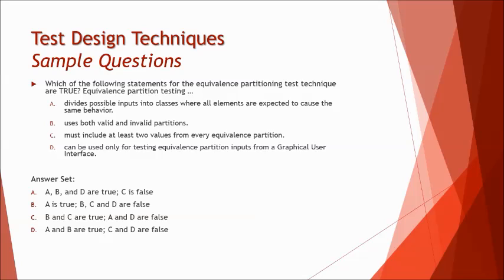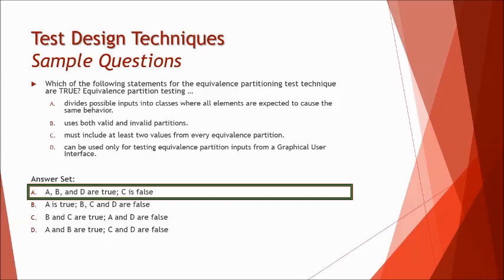Don't get diverted with the graphical user interface which means the UI, user interface. It comes back to the black box testing technique. In chapter two we spoke about black box testing which means a person who does not have any understanding on the back end and works on the front end by entering inputs into user interface. Equivalence partition is a black box test technique. So D is absolutely true and A, B, D are true, making A the right option.